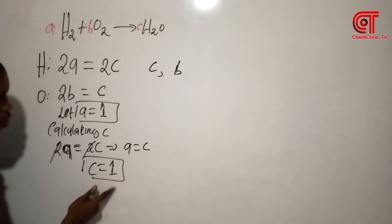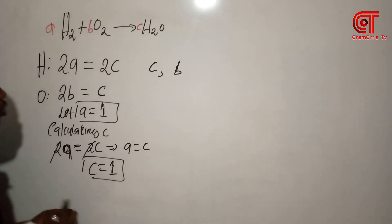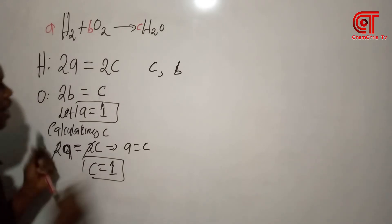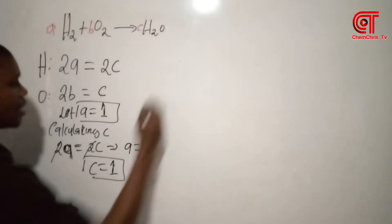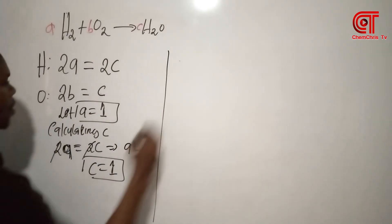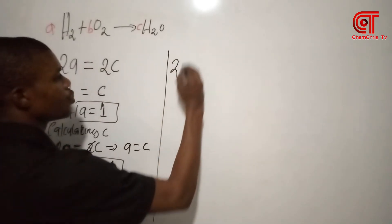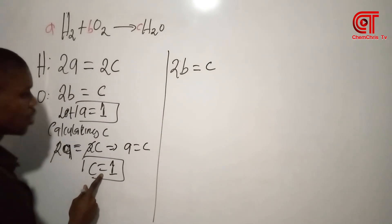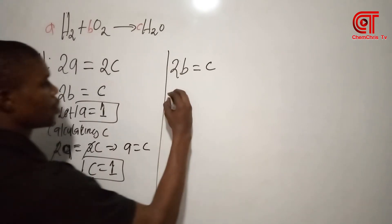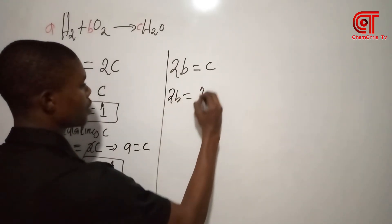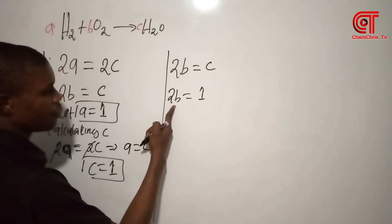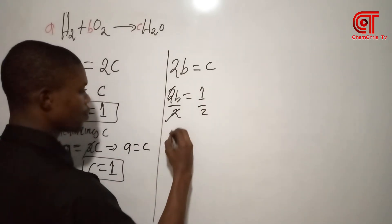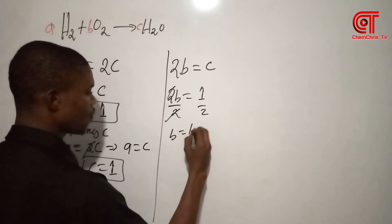So A equals 1 and C equals 1. The next thing is to calculate B. From the oxygen equation, 2B equals C, and my C is already equal to 1, so 2B equals 1, making B equal to 1/2.